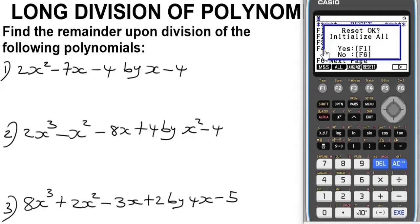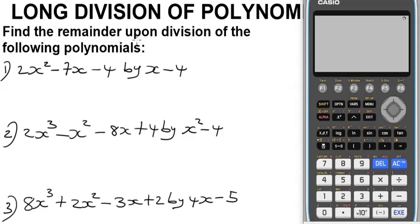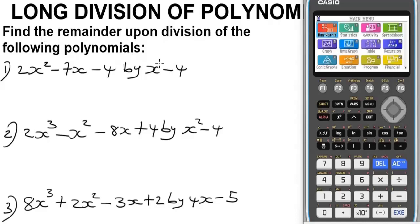So we have these questions on long division of polynomials which we will deal with using the Casio calculator. The equation says find the remainder upon division of the following polynomials.